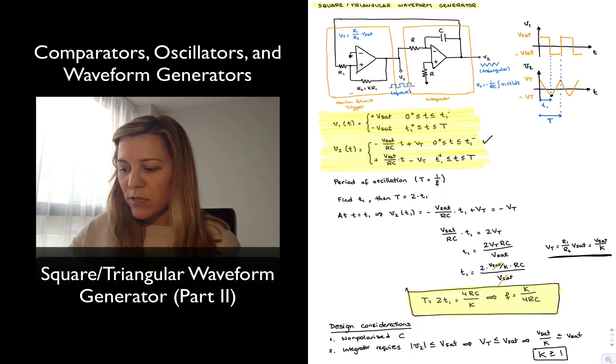And what that means, if we look at the figure, is that if K is greater than or equal to 1, it means that R2 needs to be greater than or equal to resistor R1 in our inverting Schmitt trigger. So important design considerations.